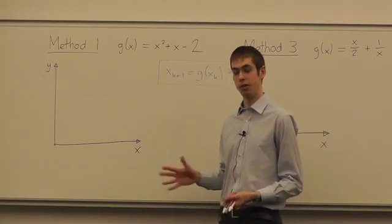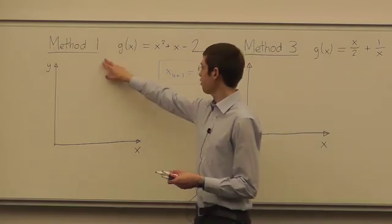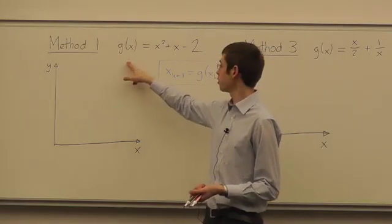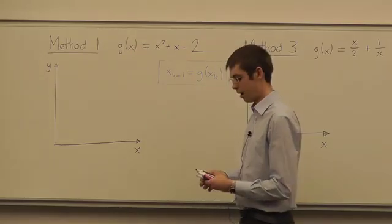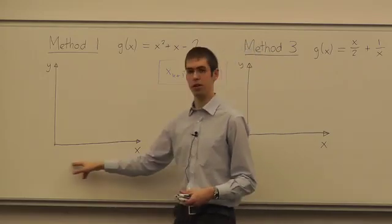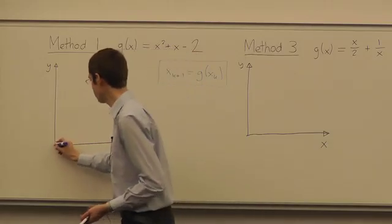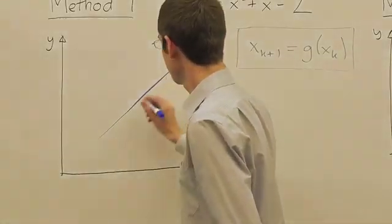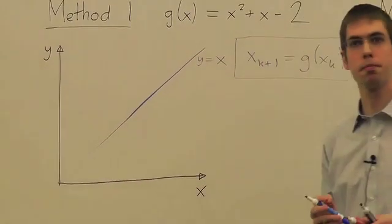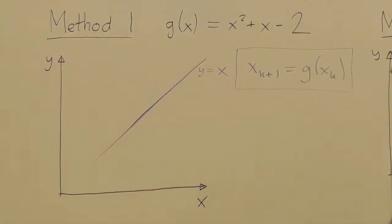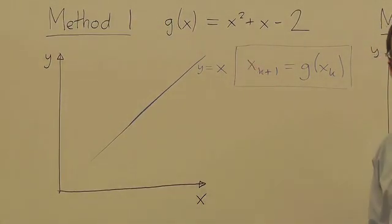The easiest way to see this is graphically. So let's take method 1, where our iteration function was x squared plus x minus 2. I'm going to take some x and y axes, and I'm going to draw, first of all, the line y equals x. And then I'm going to sketch the graph of g of x.